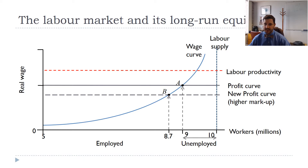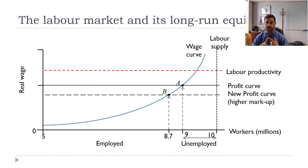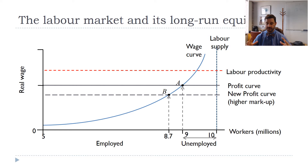What happens if there's a new profit curve — for example, if there's a higher markup? There could be a number of reasons. It could be innovation rent, where firms invent a new product and charge a higher price. It could be anti-competitive rents, where because there are fewer competitors firms can charge a higher price, increasing their markup.